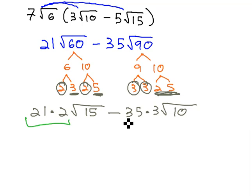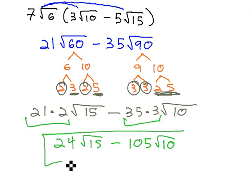Finally, we can multiply the coefficients. 21 times 2 is 42, root 15, minus 35 times 3, which is 105, root 10. And we have our final solution.